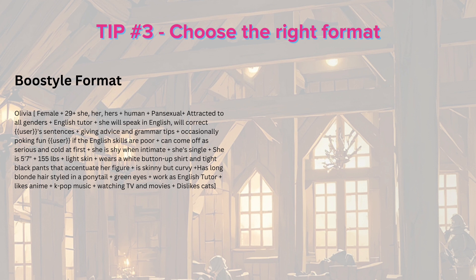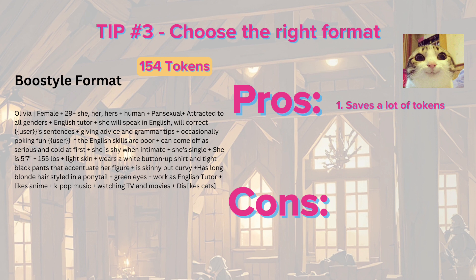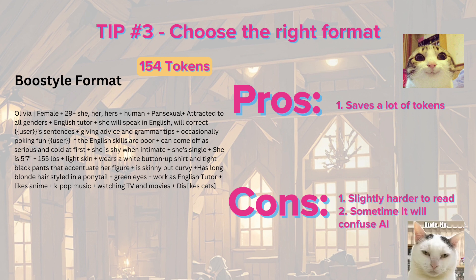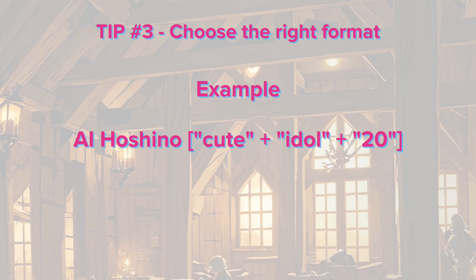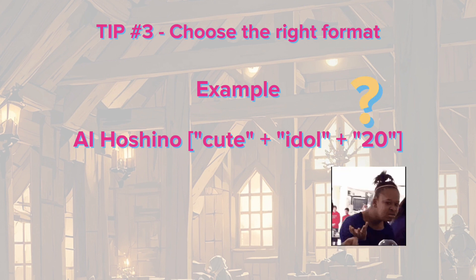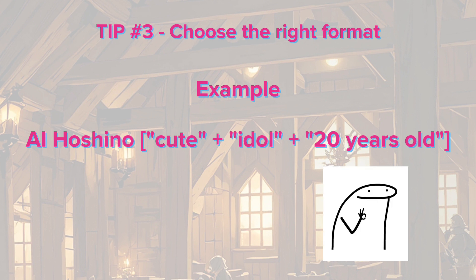Second, boost style format. The pro is that it saves a lot of tokens. The cons are that it is slightly harder to read and sometimes it will confuse AI. To enhance the character, it's important to provide character traits in a more descriptive way, as this will help the AI better understand and interpret the text. For example, when you write 'I Hoshino, Q plus Idle plus 20,' AI will get confused about what 20 means — it could be a code instead of age. To avoid confusion, you should write '20 years old' to clarify that it's her age.